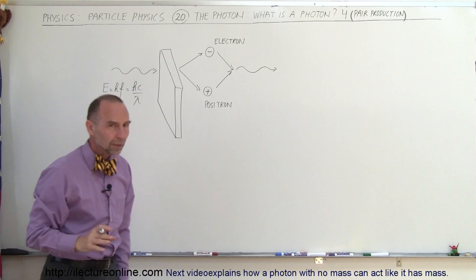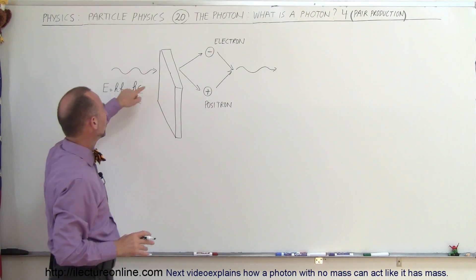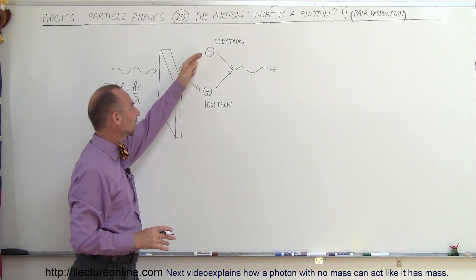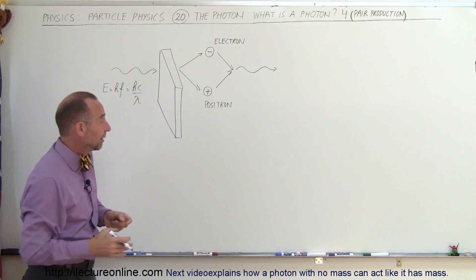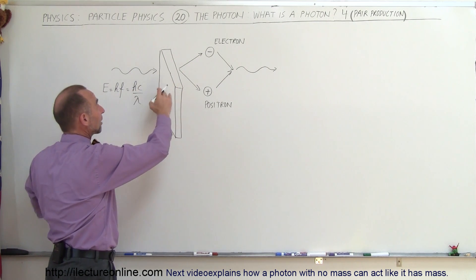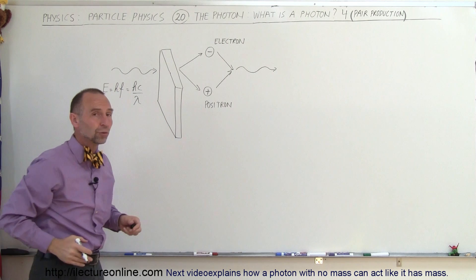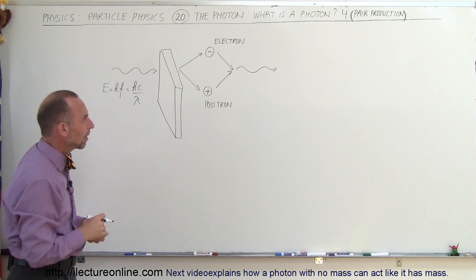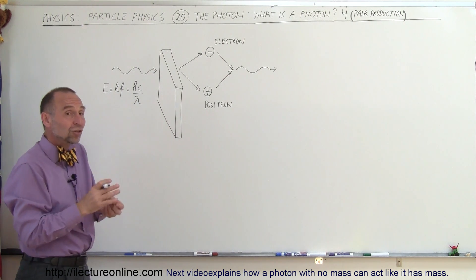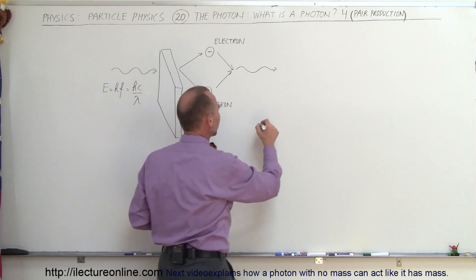Now, what is the energy required to turn a photon into an electron and a positron? Or if it was a very high energy photon, you could actually form a proton and an antiproton, or a neutron and an antineutron. Well, it turns out the amount of energy you need comes from the equation E equals mc squared.